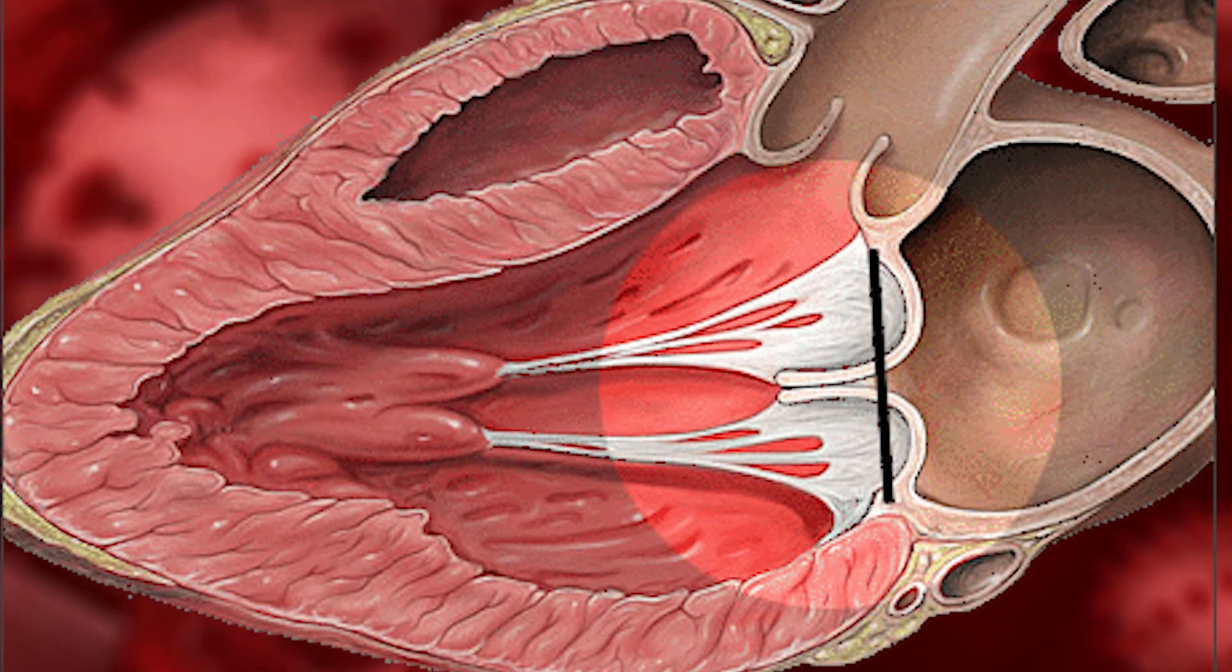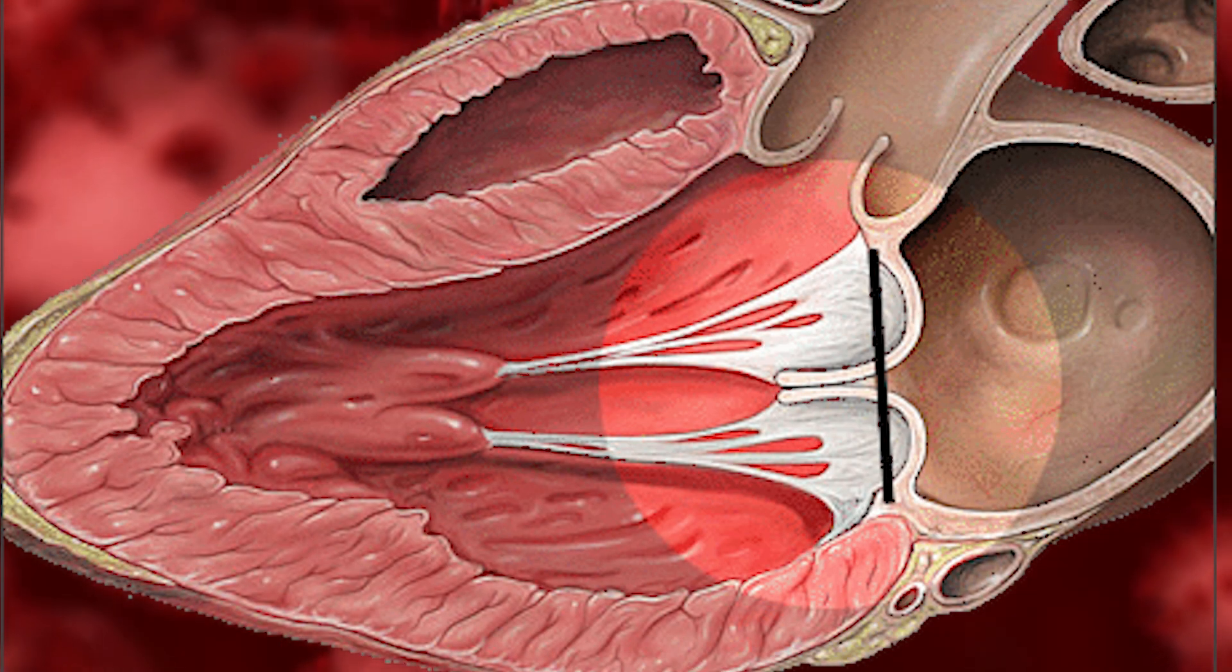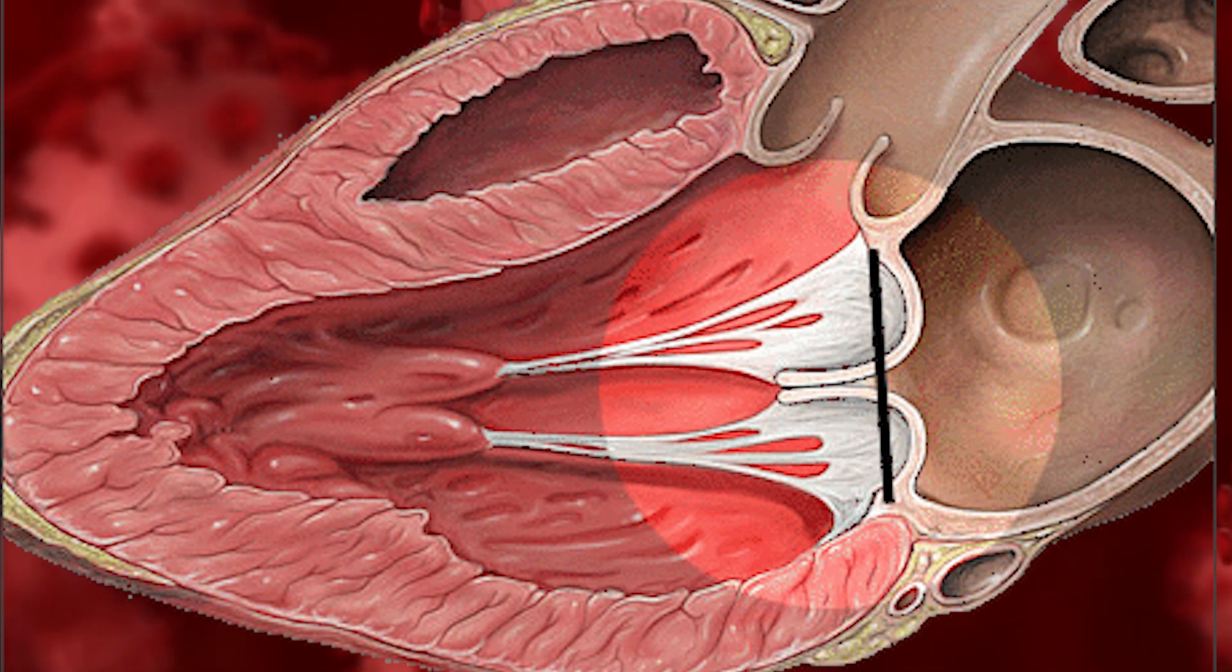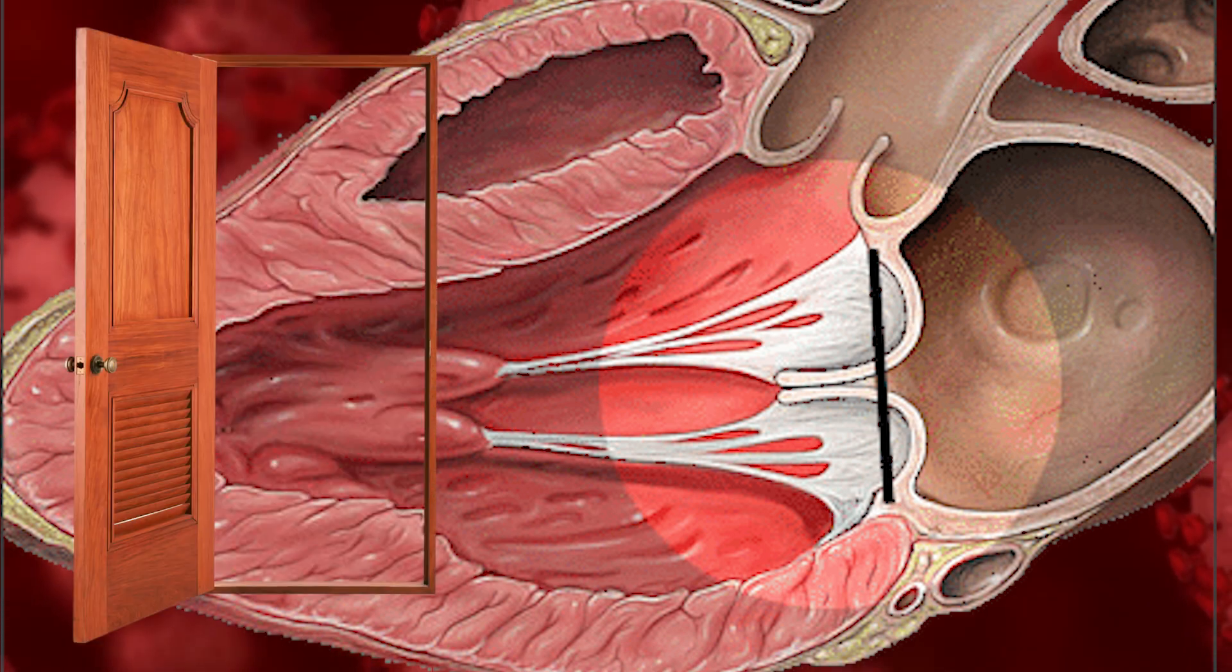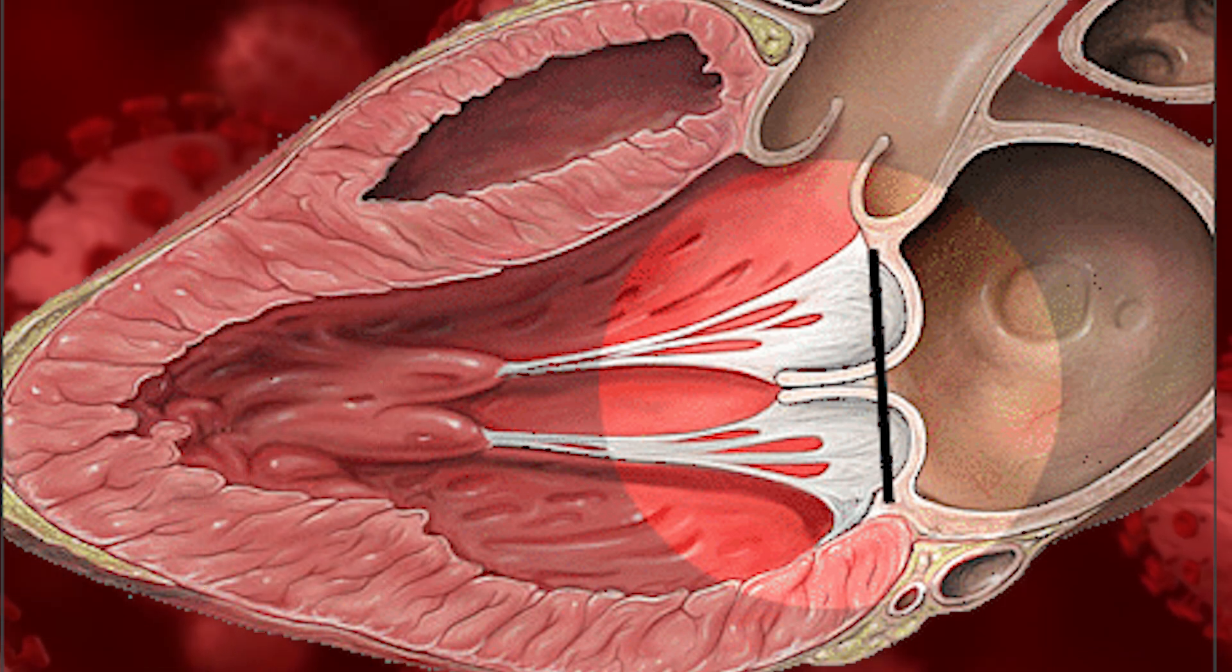Your mitral valve is made up of two strong flaps of tissue called leaflets or cusps. These leaflets open and shut with each heartbeat to manage blood flow out of your left atrium and into your left ventricle.